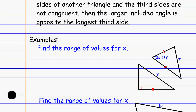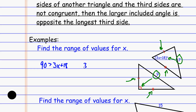So if I look at something like this, it says find the range of values for x. Because I have these sides being congruent to one another, and the third side over here is not congruent — the nine is larger — the angle across from it has to be bigger than the angle across from the seven. So this 90-degree angle has to be greater than the angle across from the seven, which is the expression 3x + 18. Also, I can't have an angle that's smaller than zero, so 3x + 18 has to be greater than zero. This is how I'll come up with the range of values.